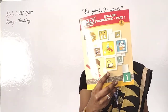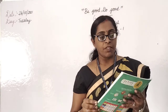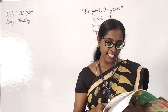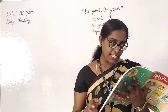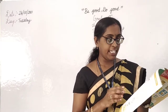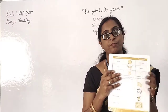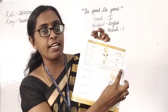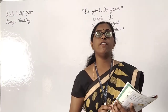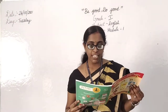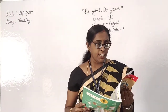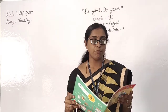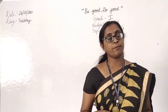Children, please take out English workbook part 1. Where did we complete? Till page number 5. Do you remember? In the previous class, what did we learn? We learnt common nouns, then special names — common name and special name.